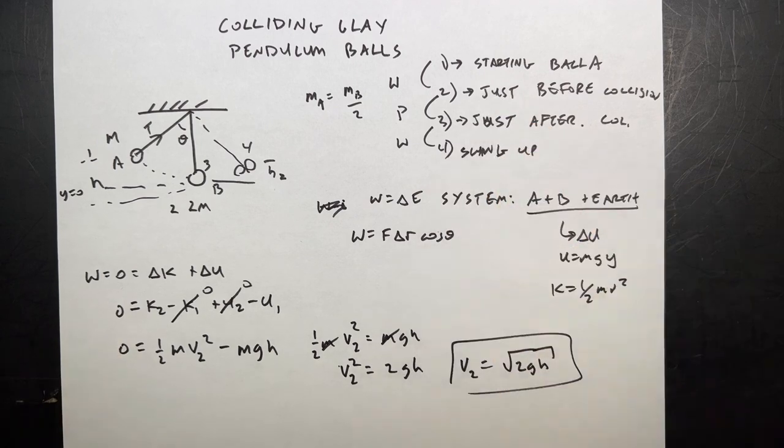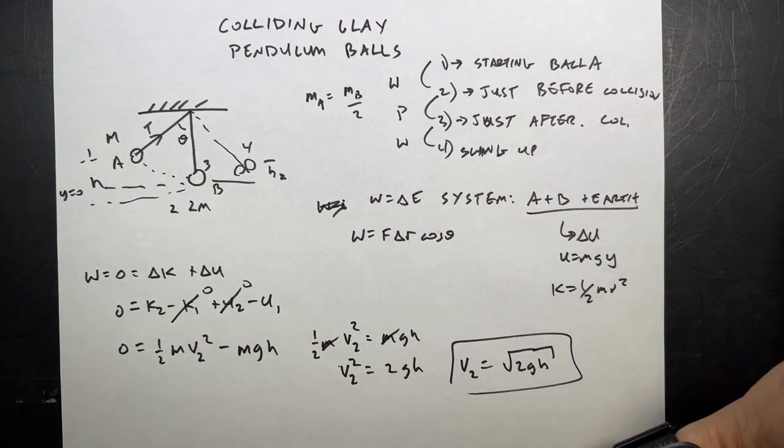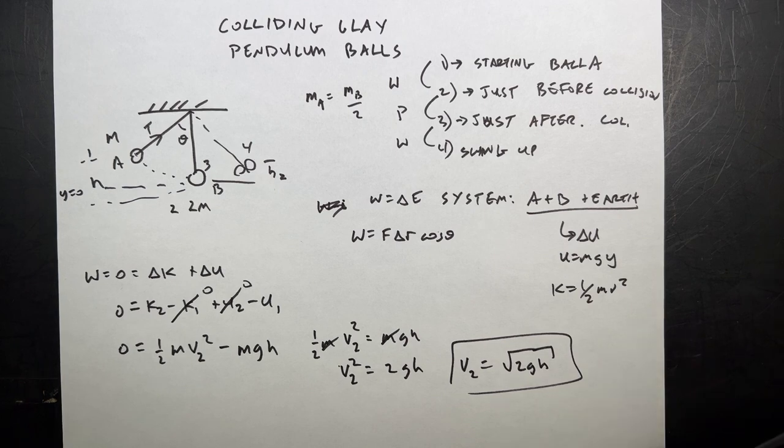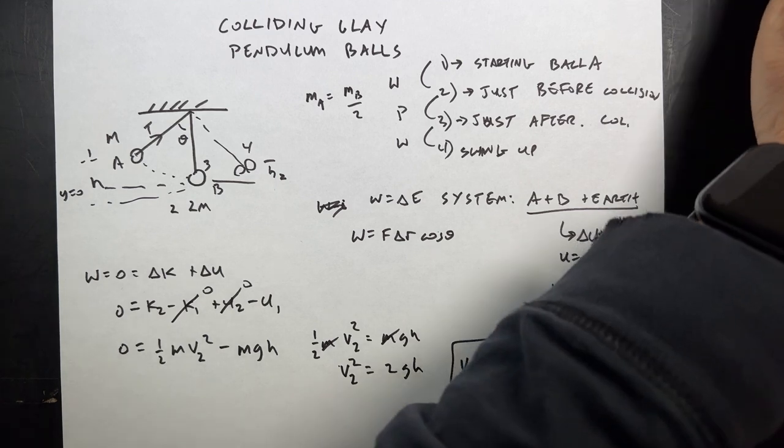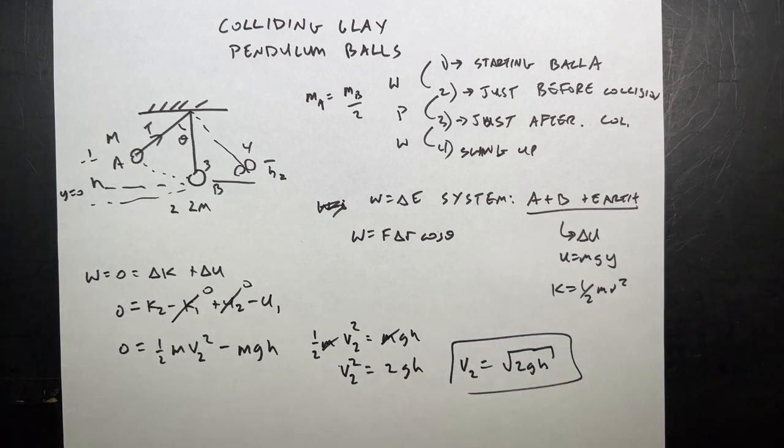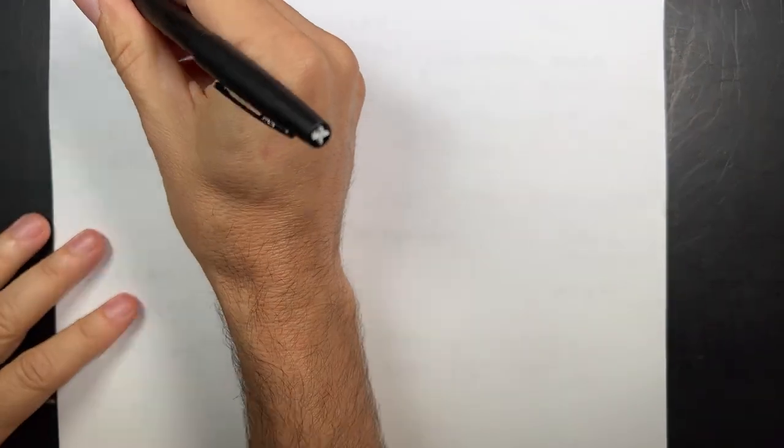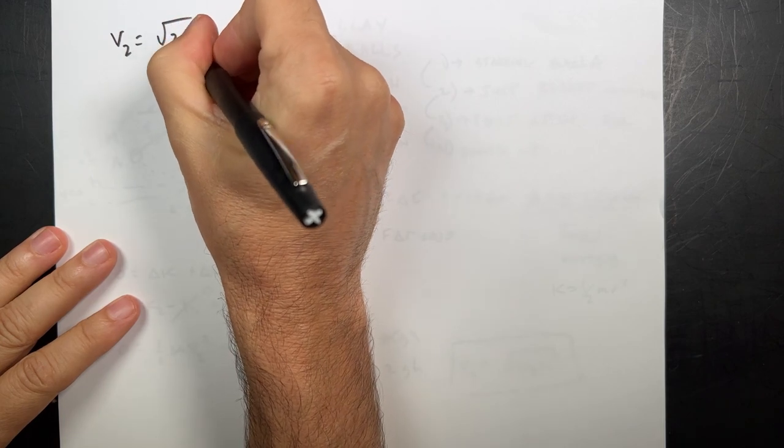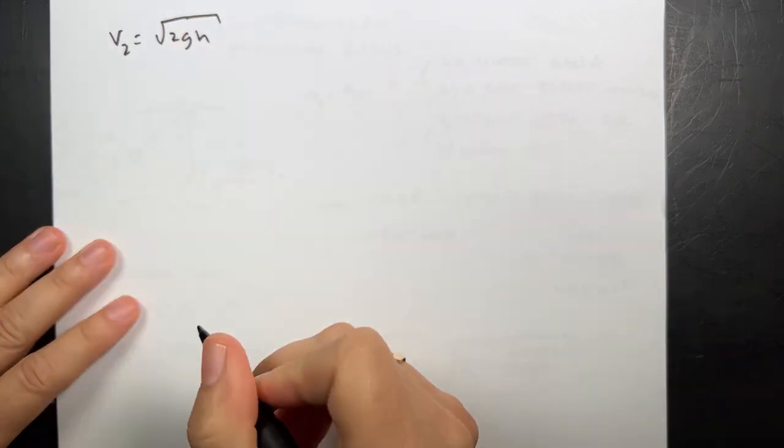V2 equals the square root of 2gh. So that's that right there. Great.